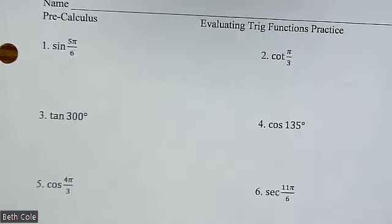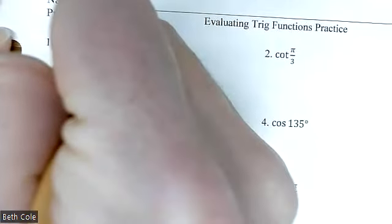So step one, what quadrant are we in? Five pi over six is in quadrant two. So you're going to draw a triangle in quadrant two.